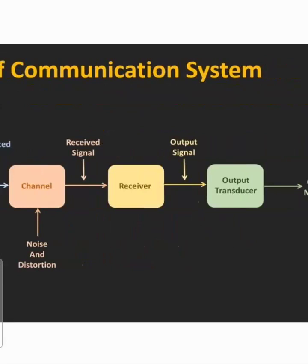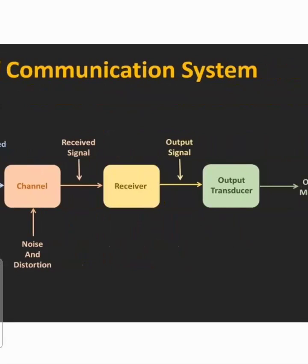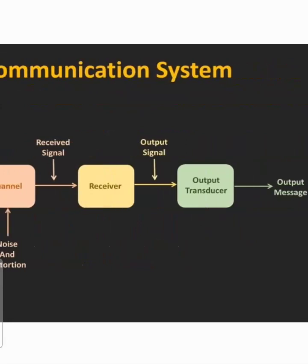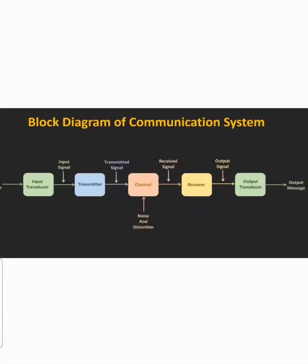After amplification, the signals are given to the next block, which is the output transducer. The output transducer will re-convert the information signal into its original form. If speech signals are present, the output transducer is a speaker; if text signals are there, it is a CRT monitor; and if video signals are present, the output transducer is a CRT or LCD/LED screen. This completes the block diagram of our communication system.